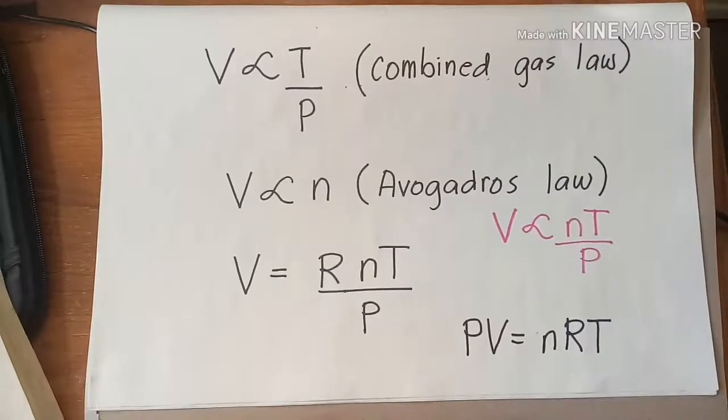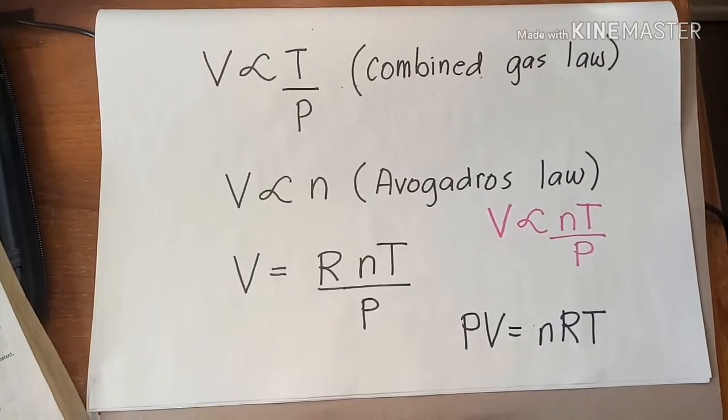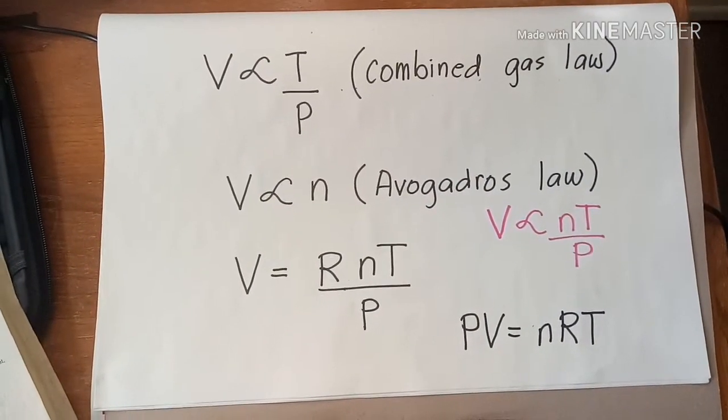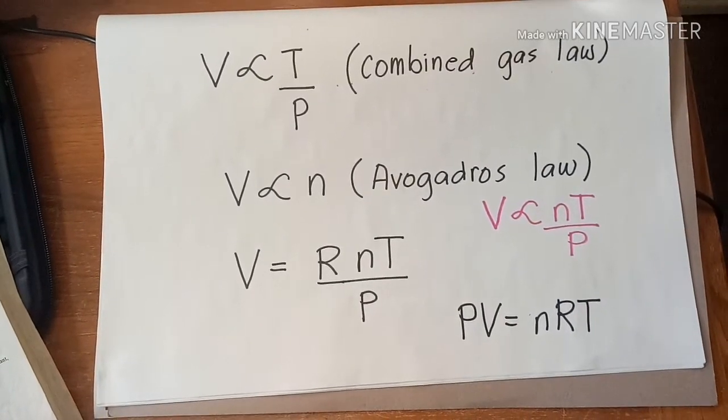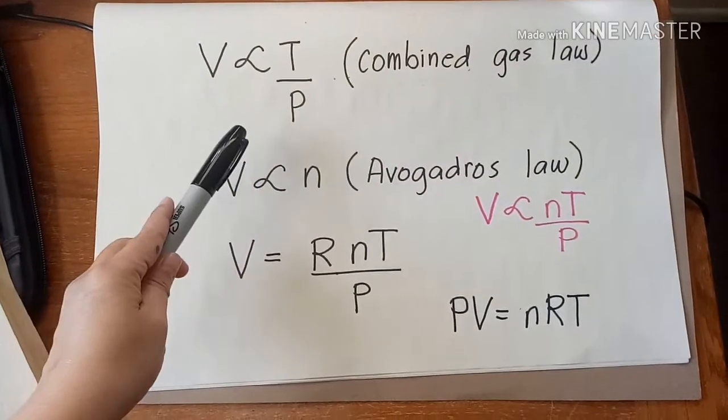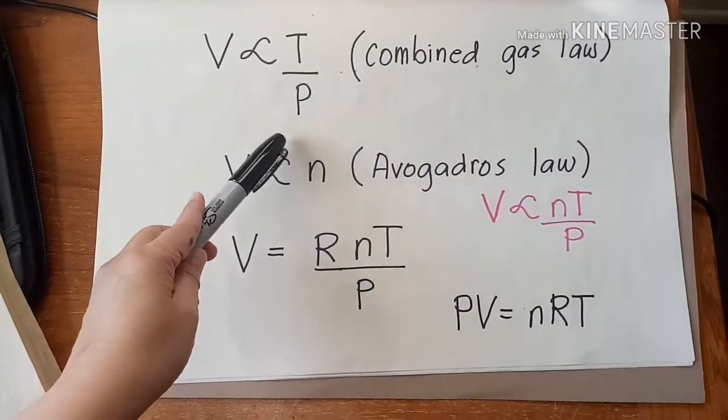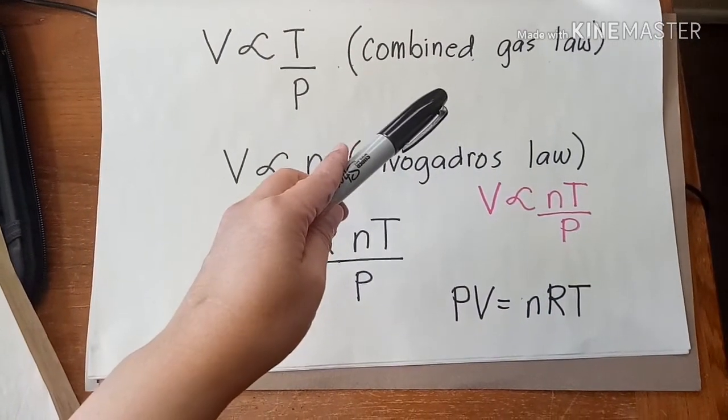We are now aware that the combination of Boyle's law, Charles' law, and Gay-Lussac's law is the combined gas law. If we rearrange this law to emphasize the effect of temperature and pressure on the volume of a gas, we will come up with the following expression: volume is directly proportional to temperature and inversely proportional to pressure, and that is combined gas law.